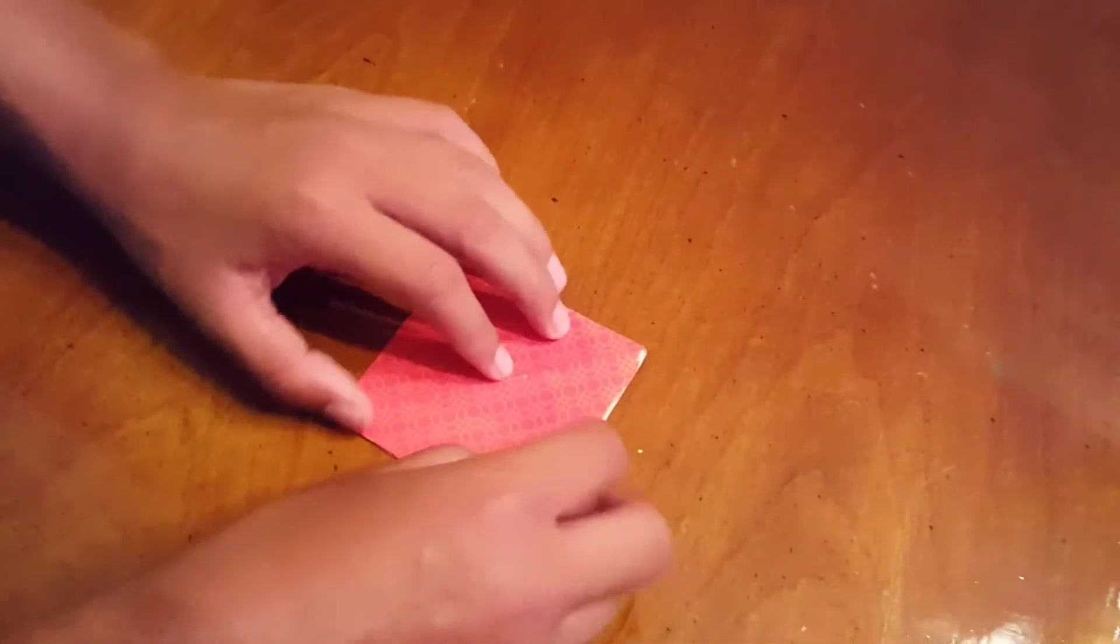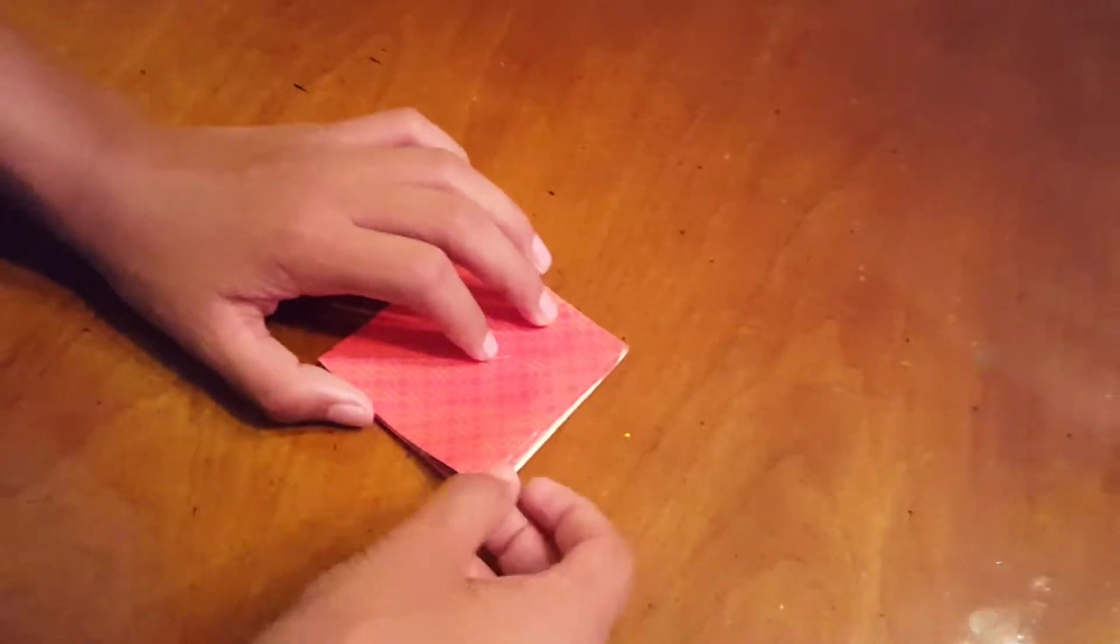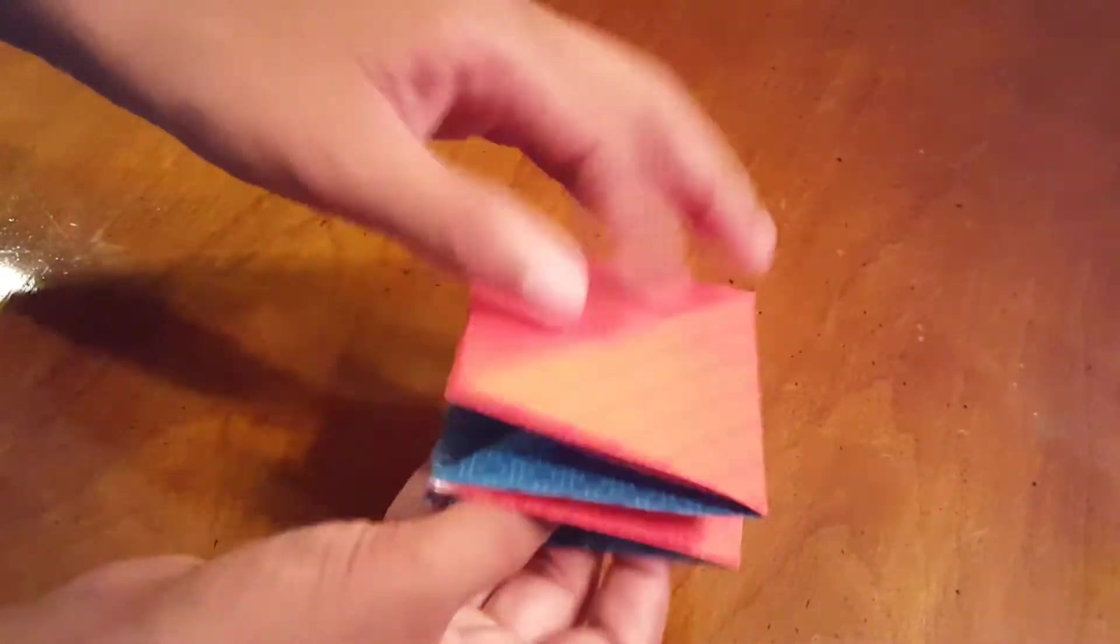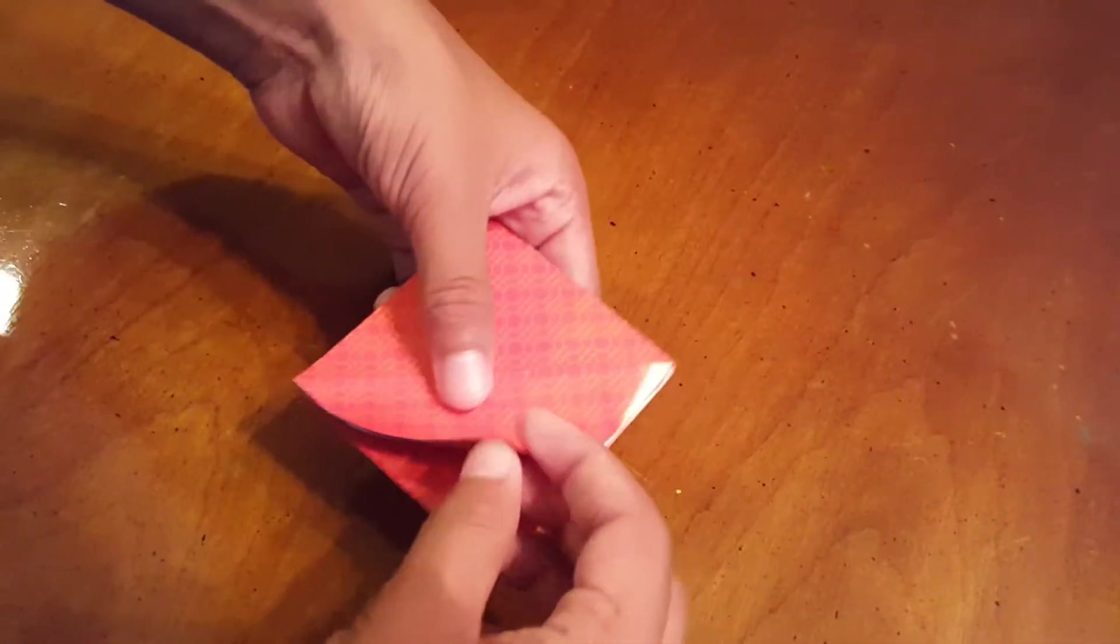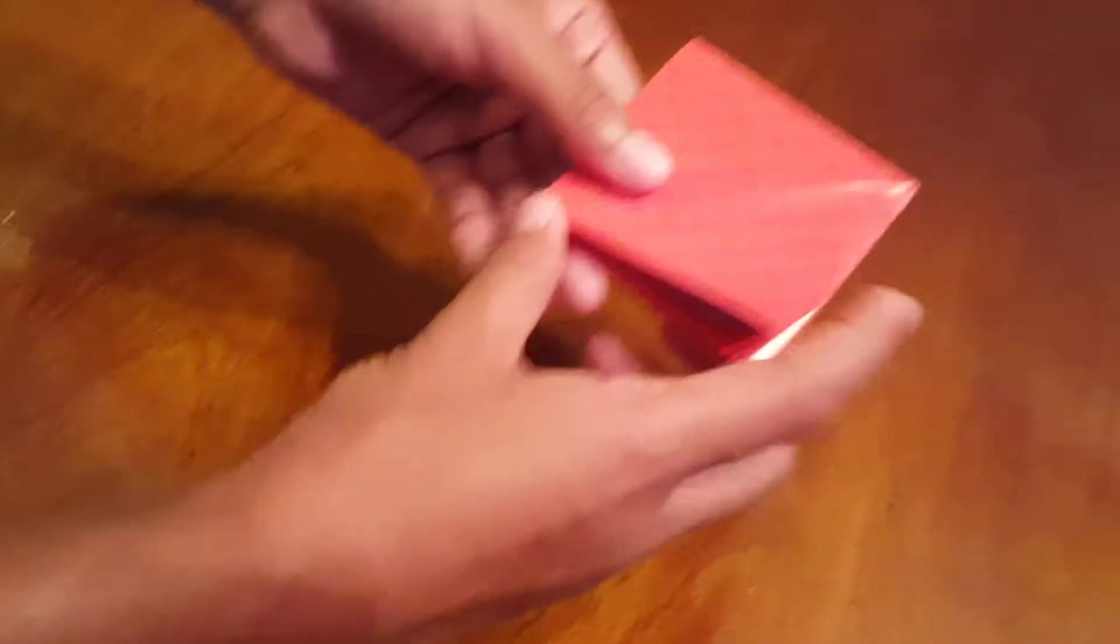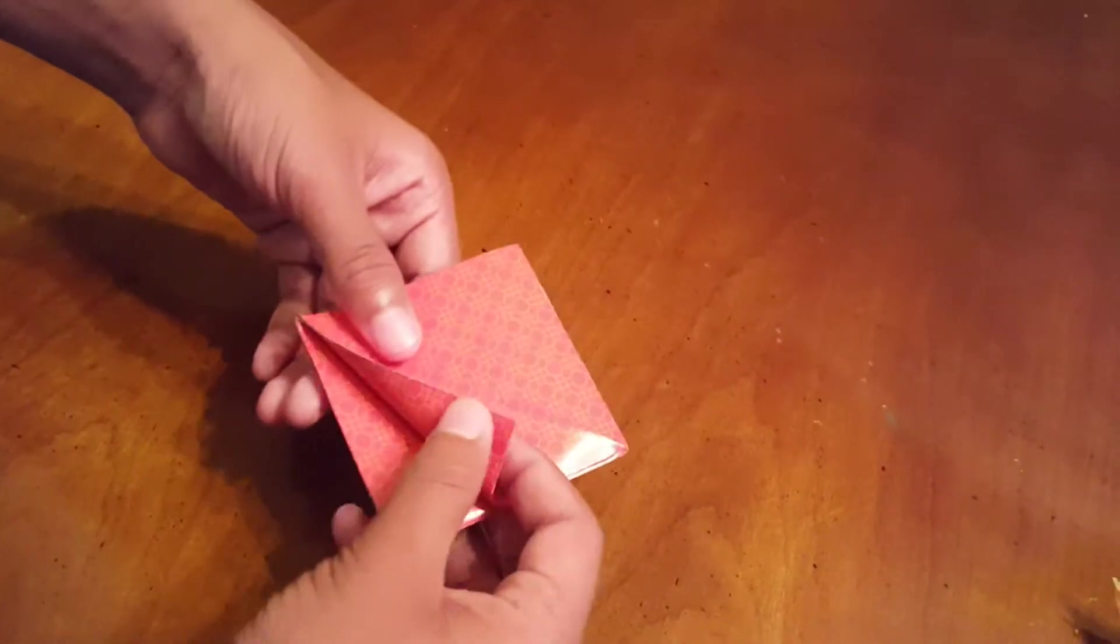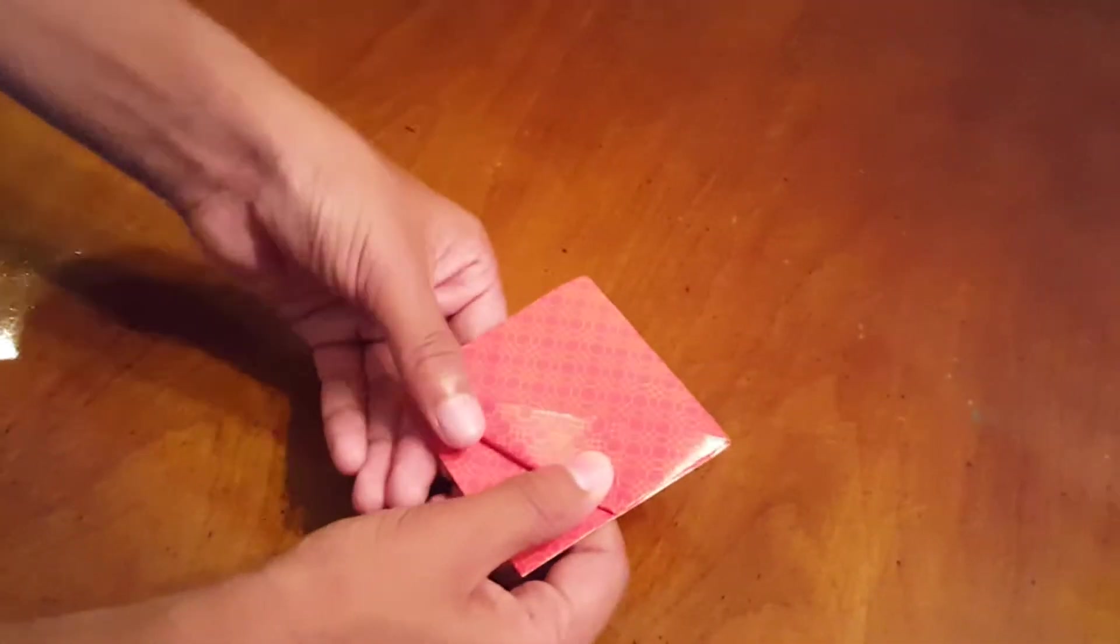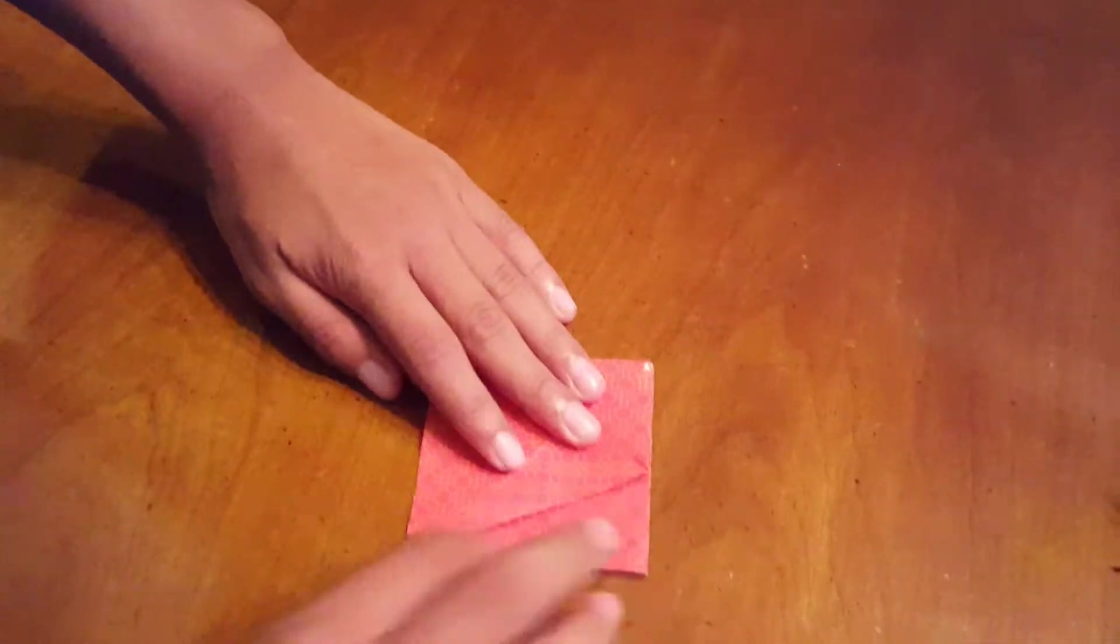Or it's also referred to as a square base. Now take the side where this floppy area is on the bottom. Take this corner and fold it like this. So basically this edge is going to this middle crease. Do the same on the other side.